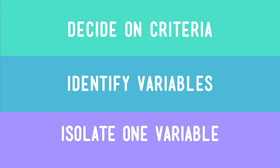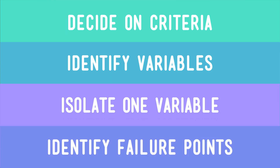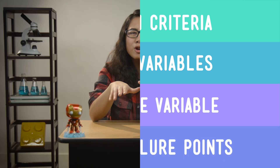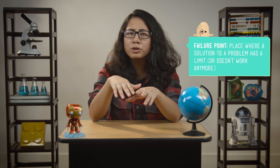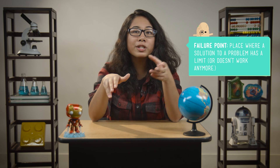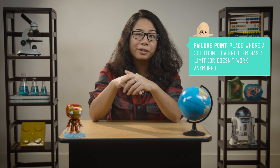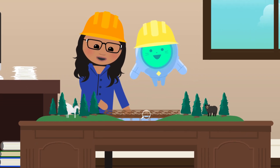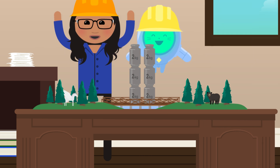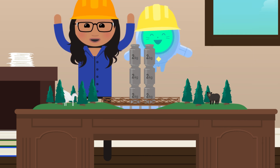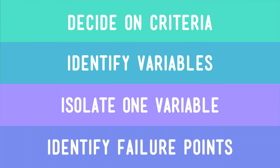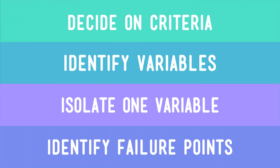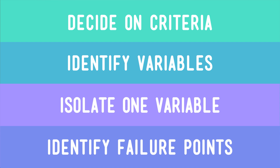Finally, the last thing we did was learn how to identify failure points — those places where a solution didn't work anymore. Then we tried to fix those failure points. Like we added some extra support to our bridge so both little Sabrina and her bulldozer could get safely across. And it was important that we do all of these things, because if we didn't, we'd have a hard time making a solution better if and when it didn't work.